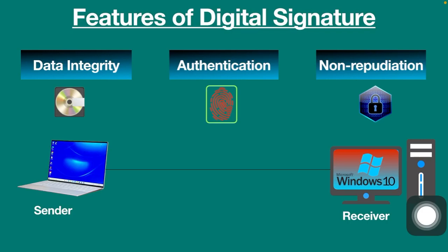The third feature is non-repudiation. Data tampering occurs over the internet, and in such cases you wouldn't want senders to disown the information they actually sent. For example, if someone sends you a file and the file is later found to be fake, you wouldn't want the sender to deny the fact that they sent it.